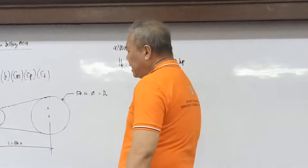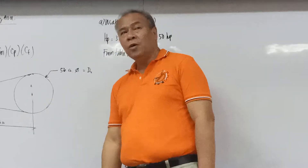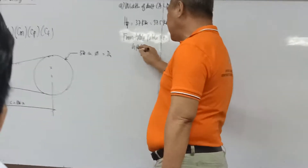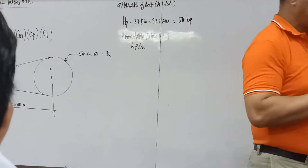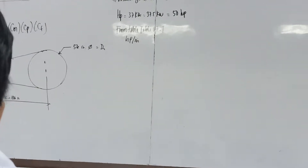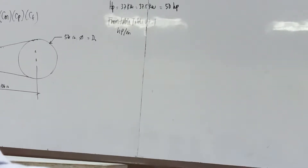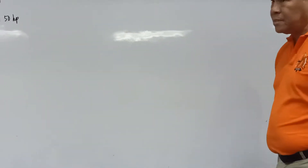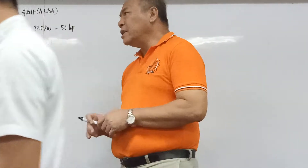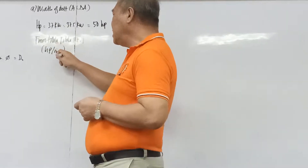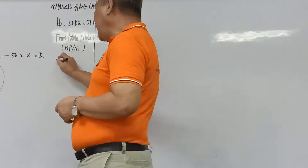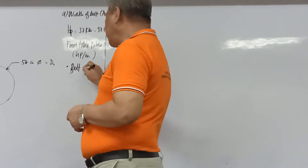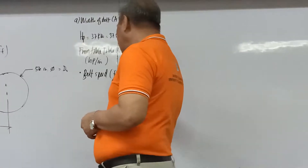Belt speed is computed in feet per minute: V = π × D × N / 12. The design is based on the driving (small) pulley. So velocity = π × 9.5 inches × 1,200 RPM / 12 inches per foot. This gives a pitch line velocity of approximately 2,984 feet per minute.